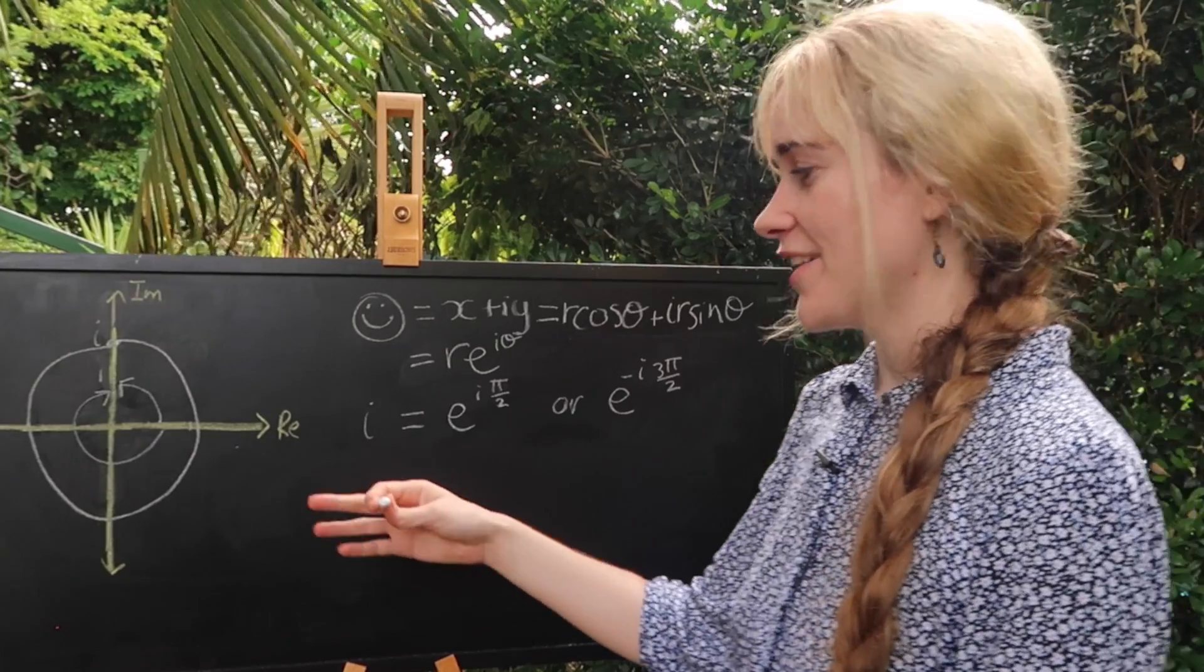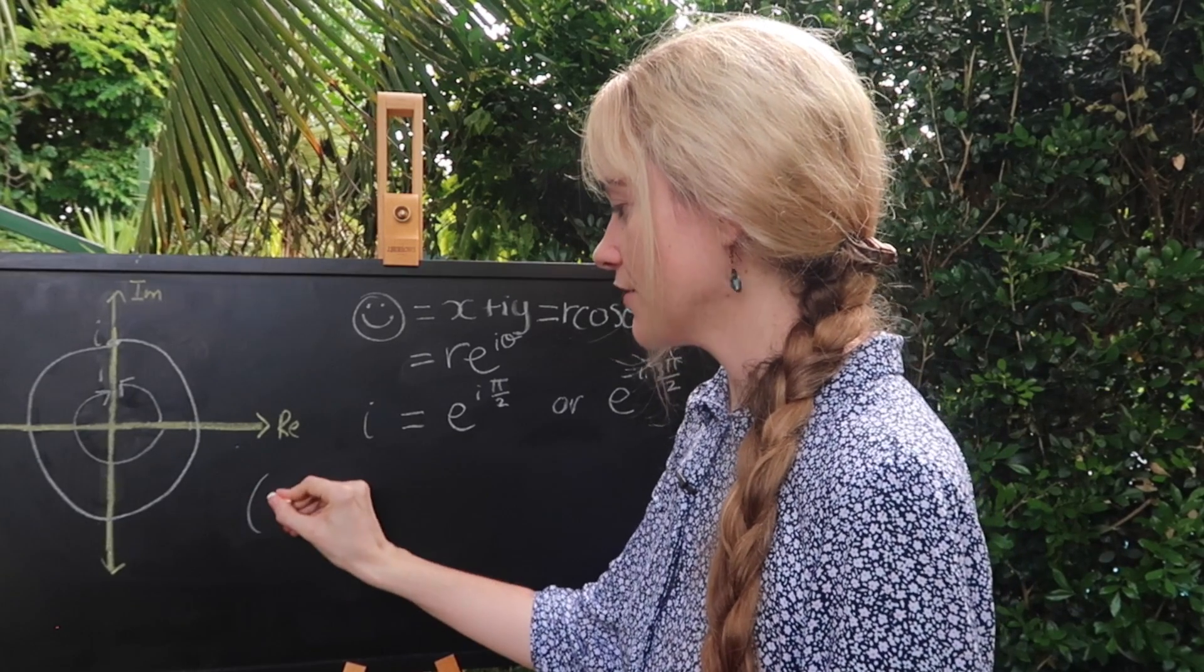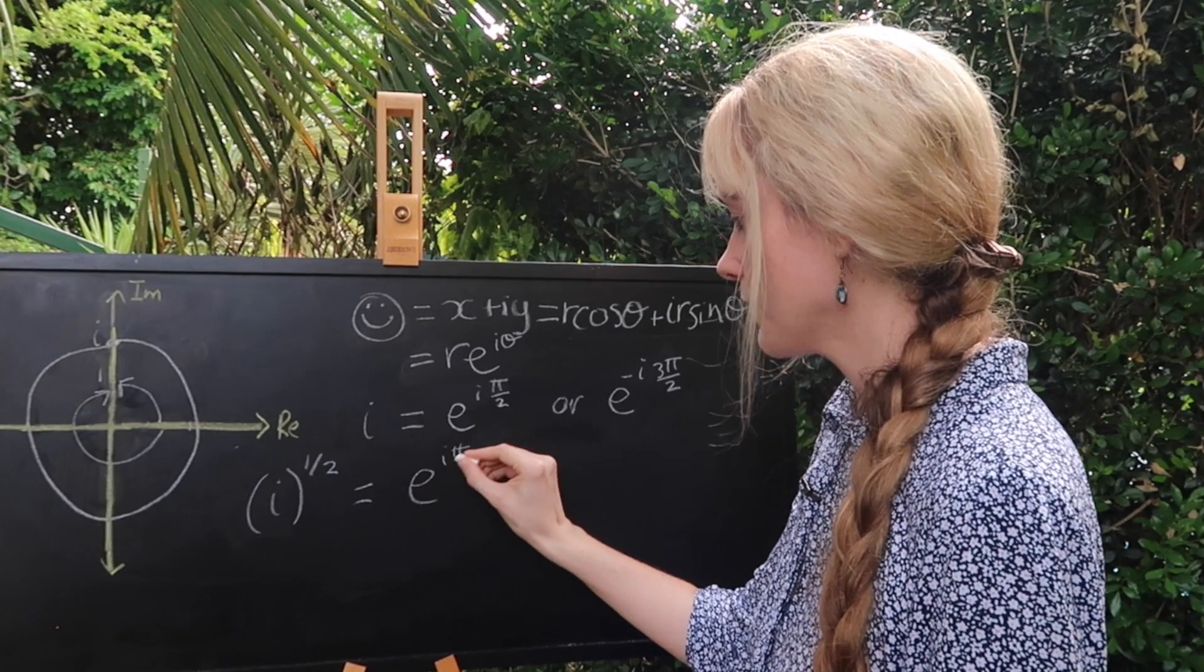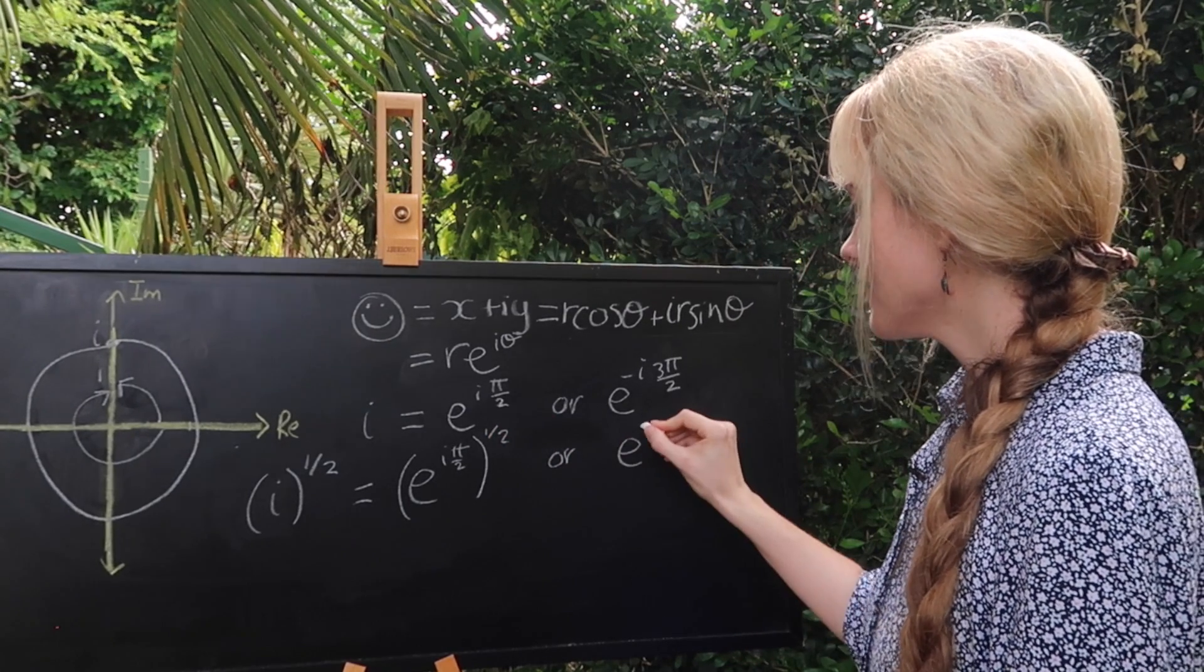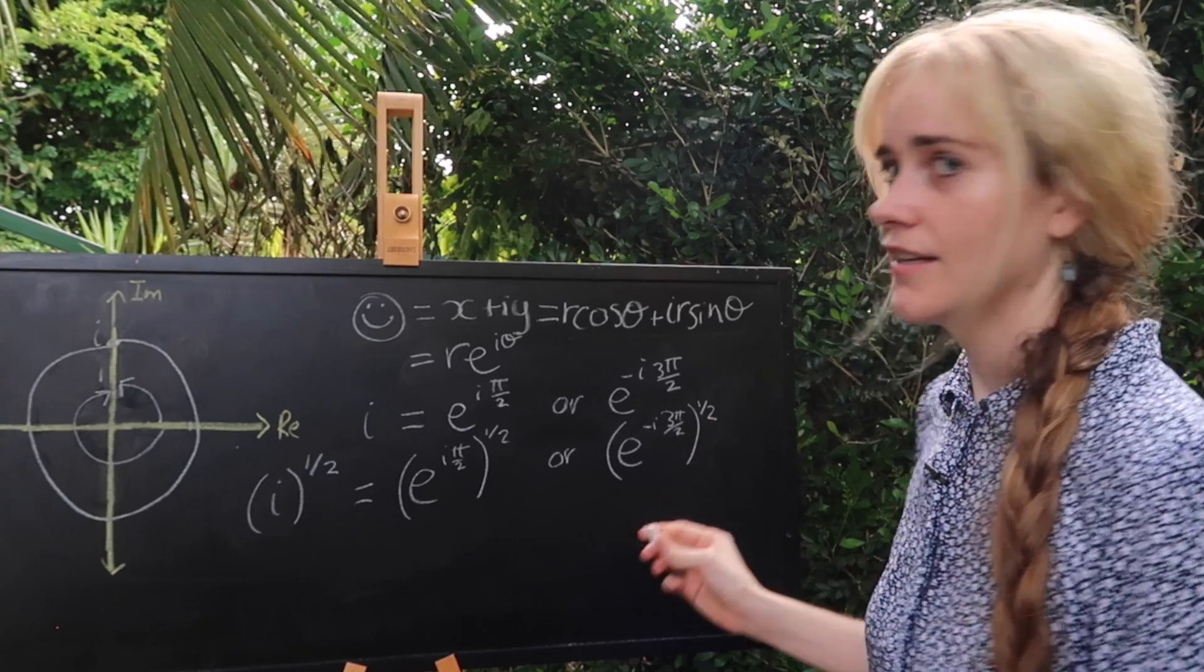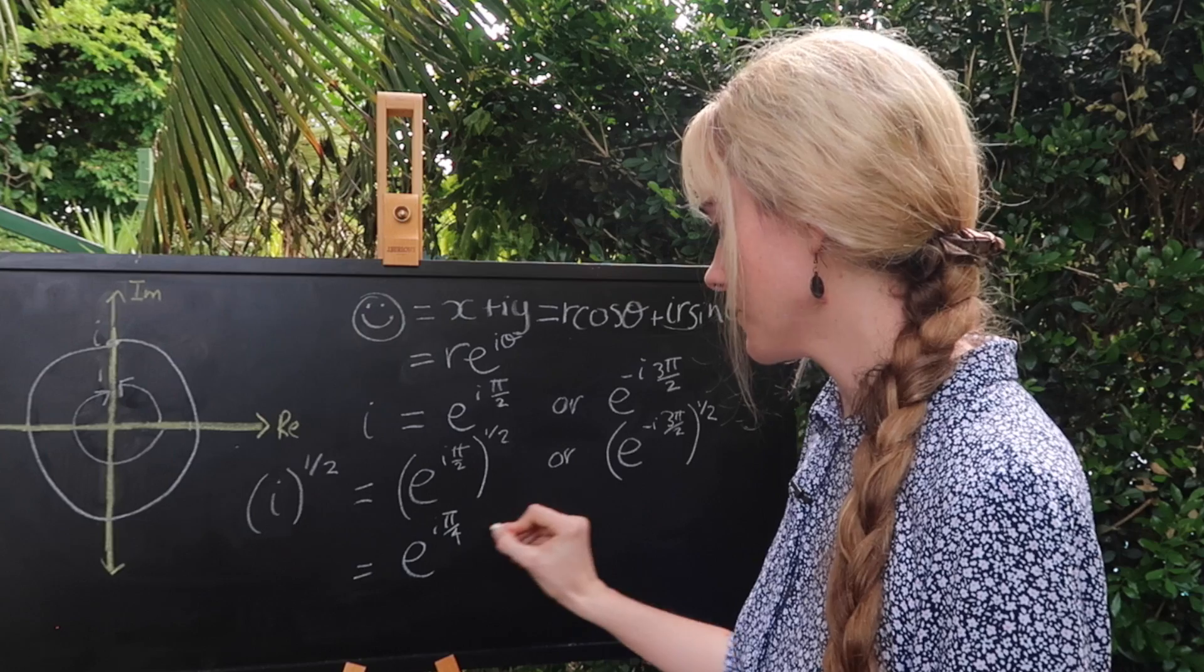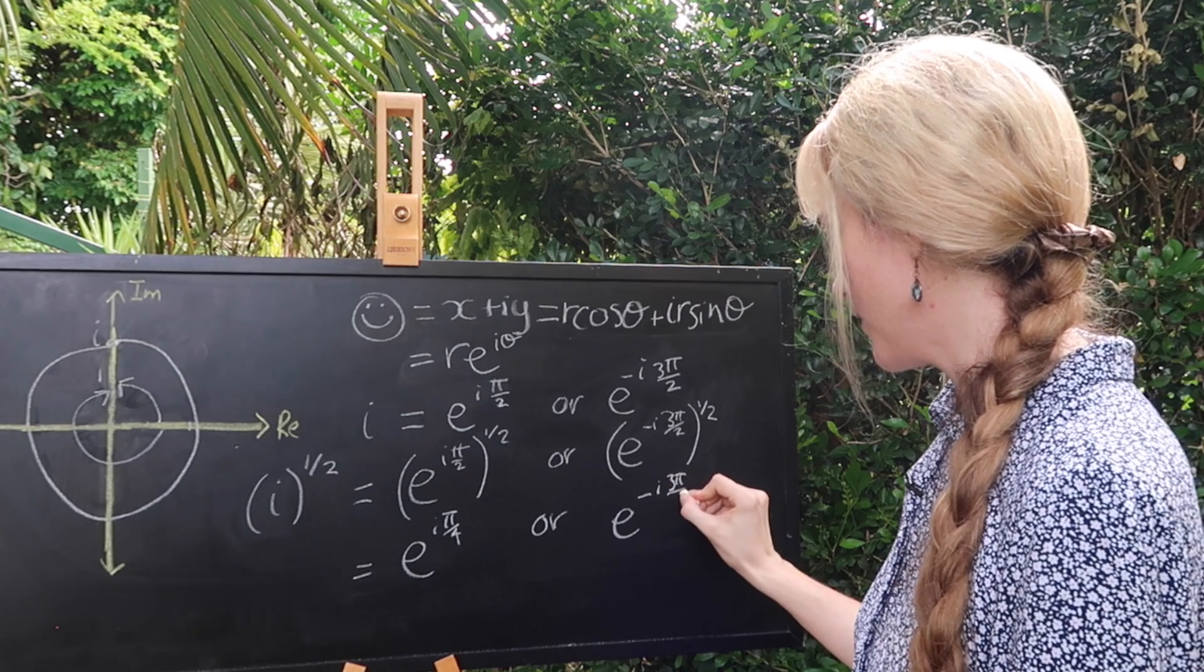Now back to i you might know that the square root of a number can be written as that number to the power of a half so we could write the square root of i as i to the power of a half and then we can just do the same thing to these terms. We would have e to the i pi over two to the power of a half, or e to the minus i three pi over two to the power of a half. To work these out just bring this exponent inside of this one and multiply them out we would get e to the i pi over four and e to the minus i three pi over four.